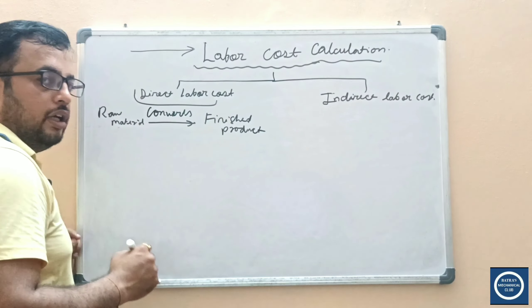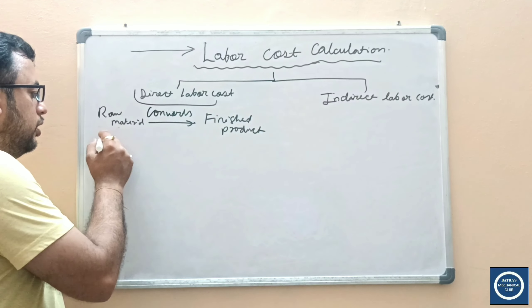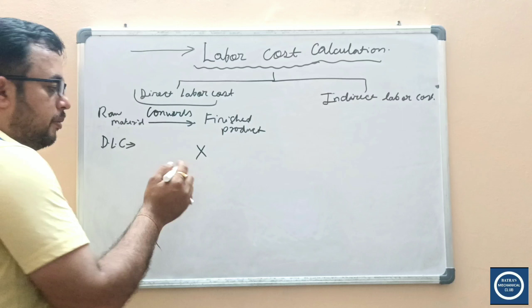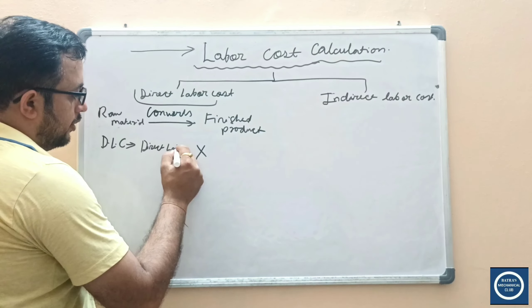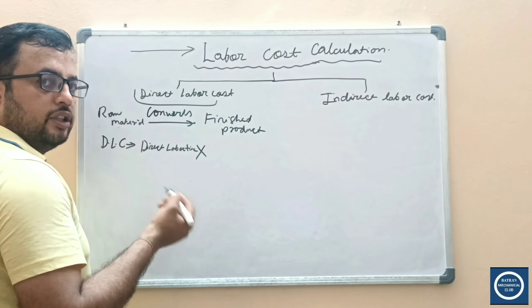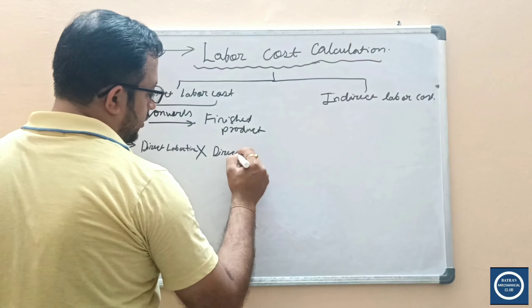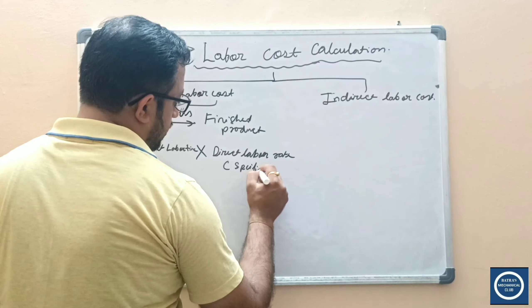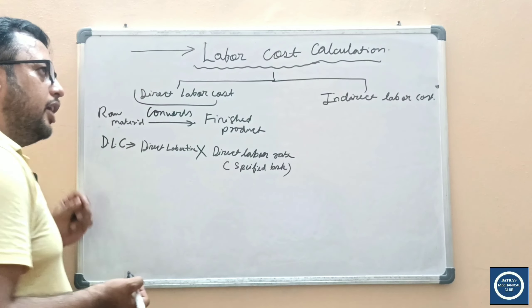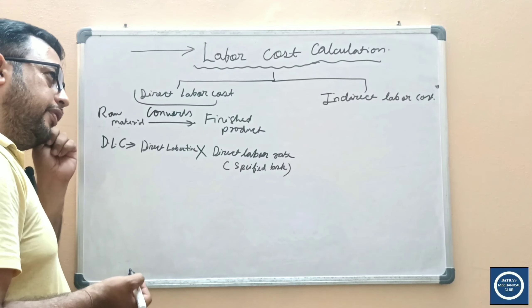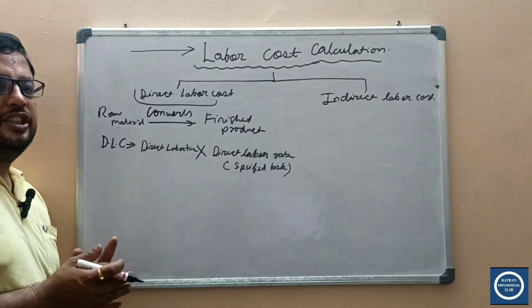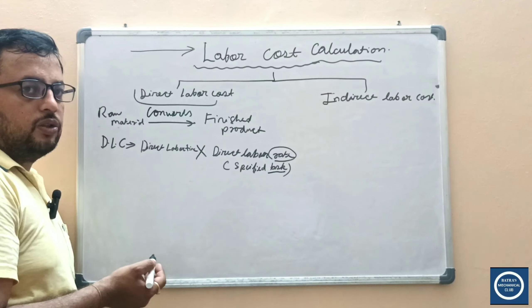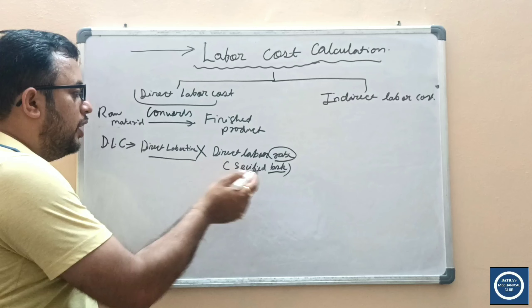How to calculate direct labor cost? It is the product of direct labor time multiplied by the direct labor rate for a specified task. For example, if someone is working on a lathe, we call them a lathe operator. We also have CNC machine operators, press operators, assemblers, and so on. Different tasks have different rates, so by the formula — direct labor time × direct labor rate — you can calculate the DLC, which is the direct labor cost.